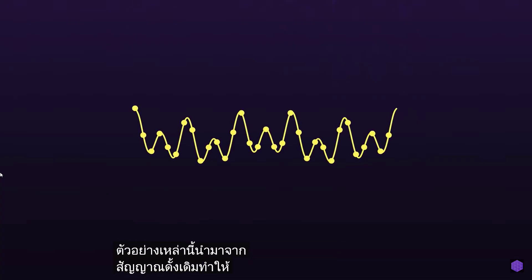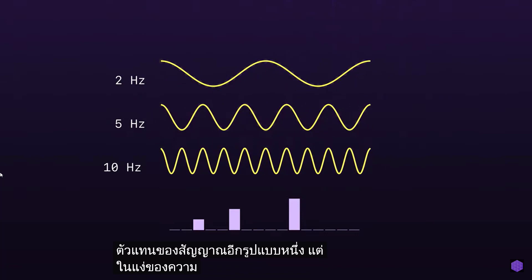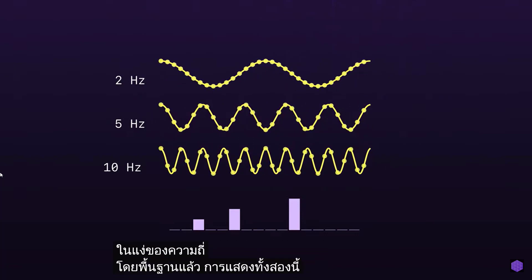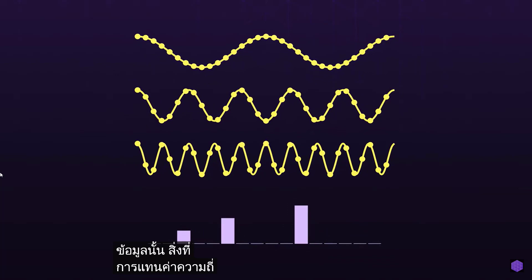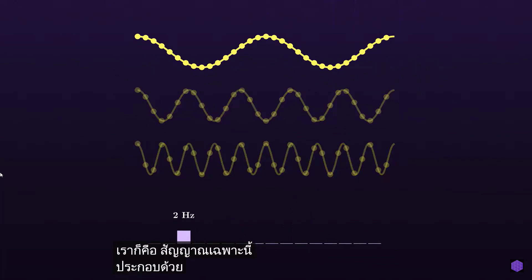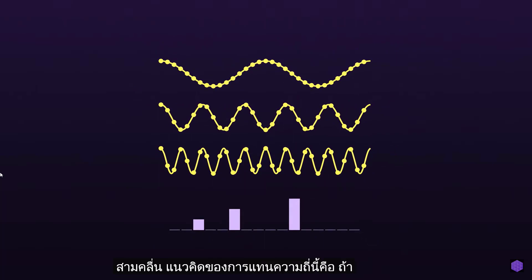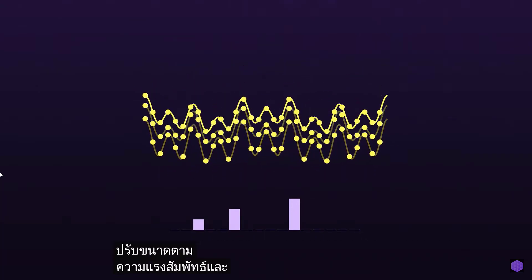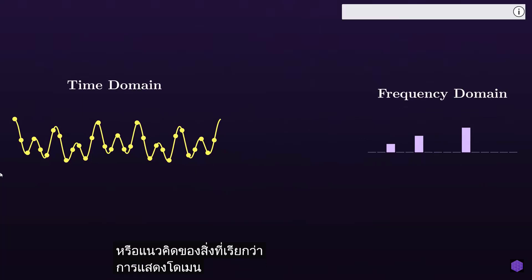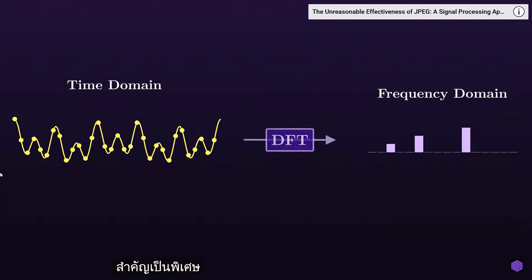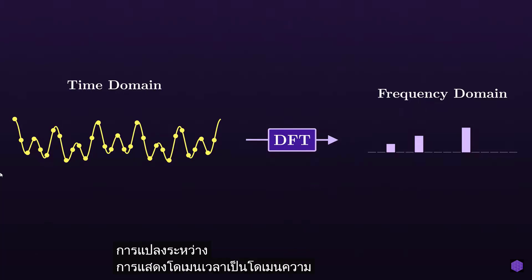These samples taken from the original signal give us a clear understanding of how the signal changes over time. What we showed with equalizers is another representation of the signal, but in terms of its frequencies. Fundamentally, these two representations give us the exact same signal — they're just two different ways of communicating that information. What this frequency representation tells us is that this particular signal is composed of three different waves of frequency 2, 5, and 10 Hz. The idea is that if we take these three waves, scale them by their relative strength, and add them together, we get the original signal. This is the core idea of what's called a frequency domain representation.